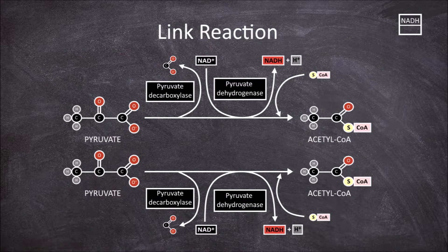This process creates two NADH, putting our net total for the link reaction at 2 NADH. These acetyl-CoA molecules are able to directly enter the citric acid cycle and complete the link between glycolysis and the citric acid cycle.